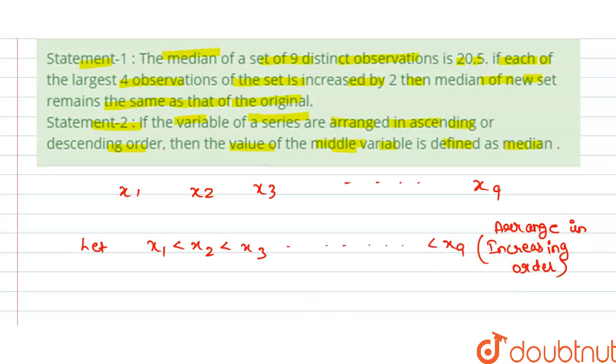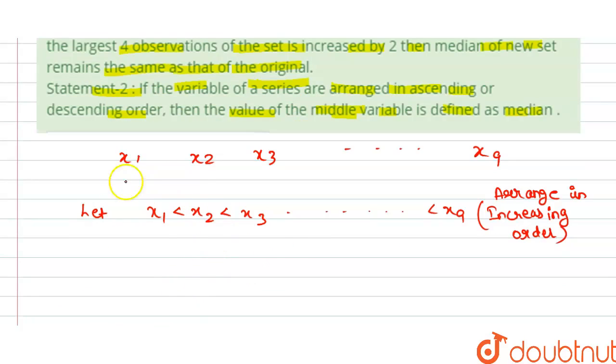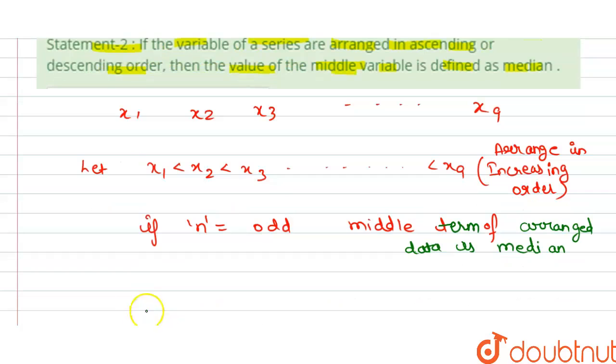We can find the middle term. If the number of observations n is odd, then the middle term of arranged data is the median. If n is even,